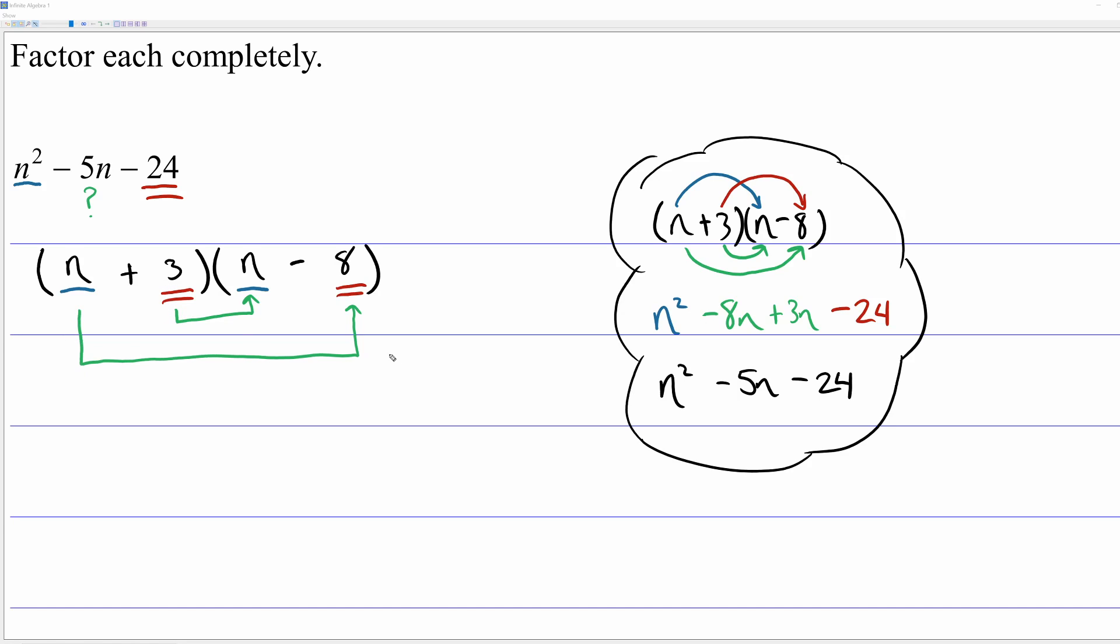So let's test it. The outside two terms, we have negative 8n. The inside two terms, we have positive 3n. And 3n minus 8n, that is the negative 5n that we wanted in the middle.